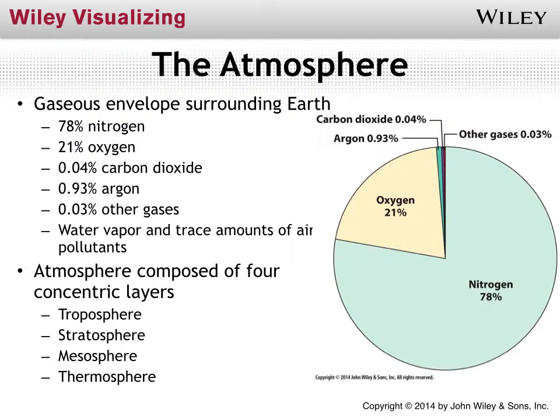Looking from the surface of the Earth outward, our atmosphere is composed of four layers. The troposphere is the layer we live in. Above that is the stratosphere, followed by the mesosphere, and then the thermosphere. We'll look at those in a bit more detail shortly.